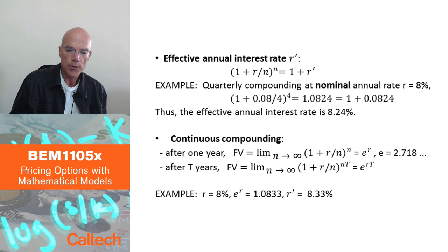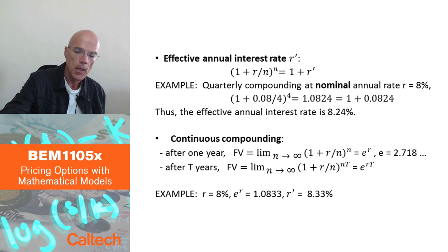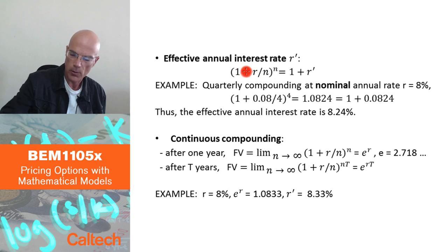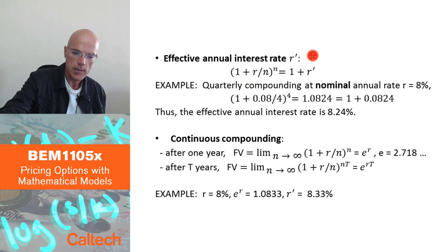Typically you compare different interest rates relative to one year using the so-called effective annual interest rate, denoted r′. If you compound n times a year, after one year you have (1 + r/n)^n. The effective annual interest rate r′ is defined such that 1 + r′ equals (1 + r/n)^n.